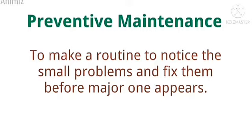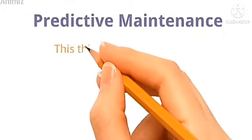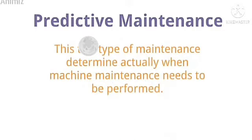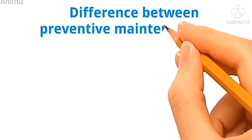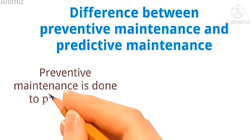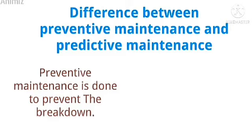Then let's look at predictive maintenance. This type of maintenance determines when machine maintenance needs to be performed. So predictive maintenance is used to predict when the maintenance should be done. The difference between preventive and predictive maintenance is: preventive maintenance is done to prevent the breakdown of a particular machine or tool.